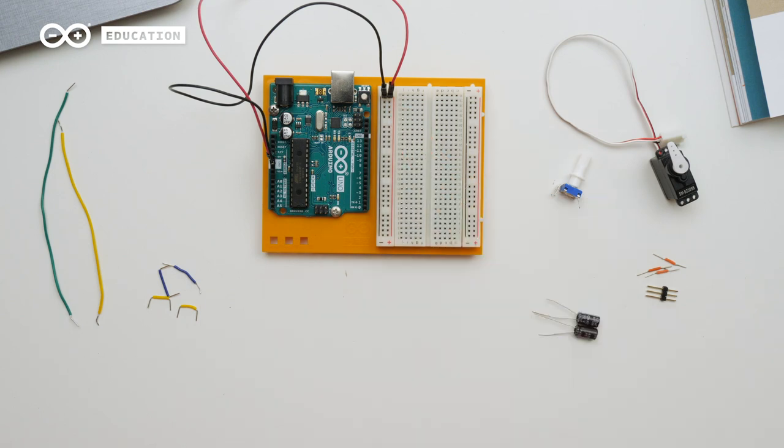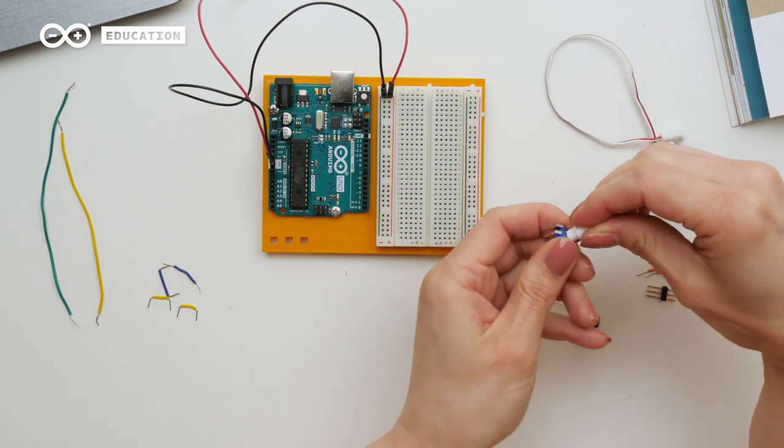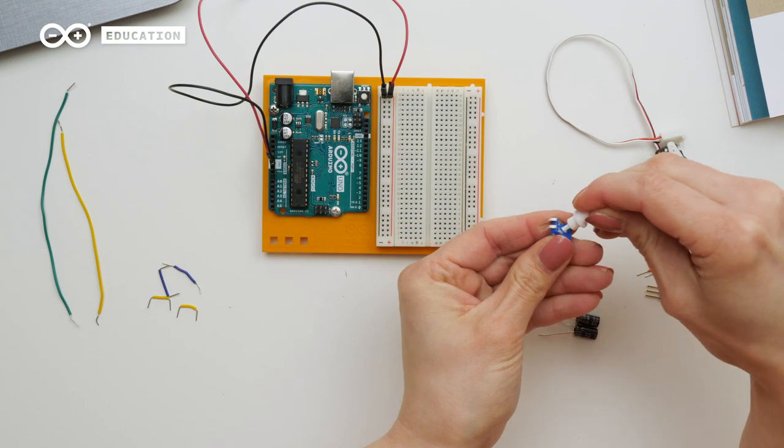Both potentiometer and servo have only three wires: one for power, one for ground, and one for signal. The potentiometer comes in two pieces. Attach the knob to the base.